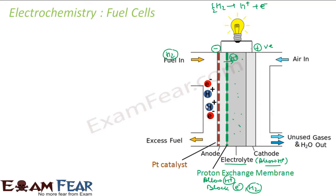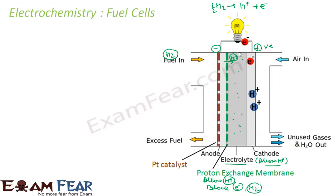The platinum catalyst helps the hydrogen break into H+ and E− ions. The proton exchange membrane will only allow H+ ions — it will not allow E− ions to pass. So H+ ions pass through the membrane and the electrolyte, moving from anode to cathode. The electrons, blocked by the green membrane, take the external circuit path and come around — and when they cross this external circuit, the bulb glows. That's electricity.